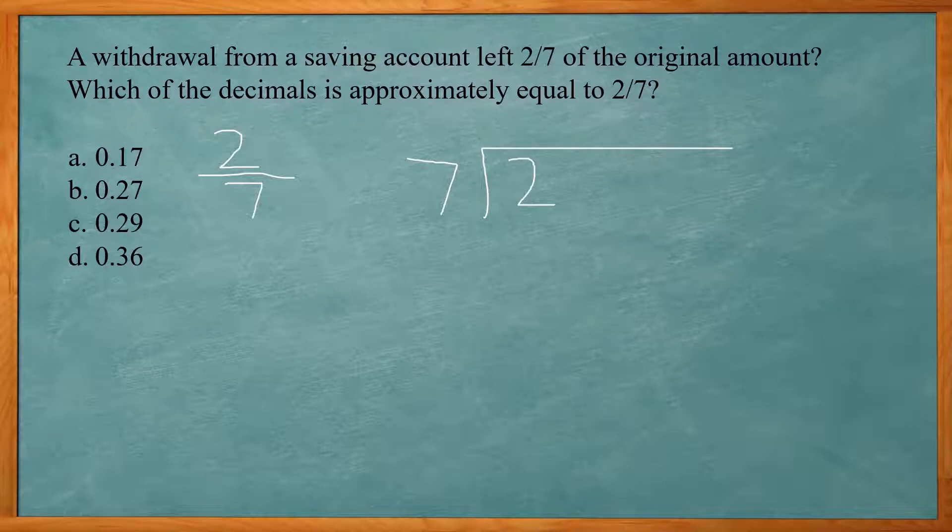So first you say, how many times does seven go into two? And two is too large, so it's going to be zero times. And since we had no numbers left underneath our division sign here, we put a decimal point up here. And then we add a zero here. Now we say, how many times does seven go into 20?